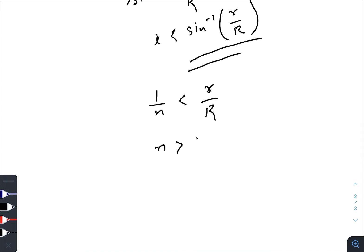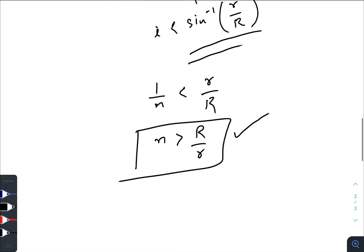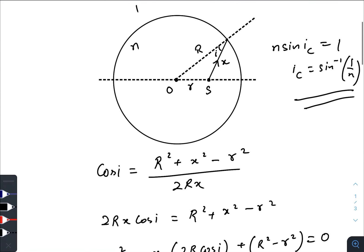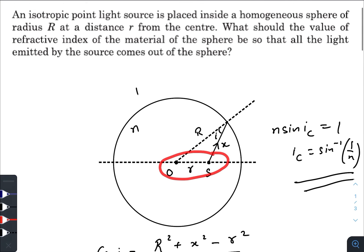So n must be greater than R/r. This is the required condition for refractive index when the source is placed at a distance r from the center and all the light will come out of the sphere.